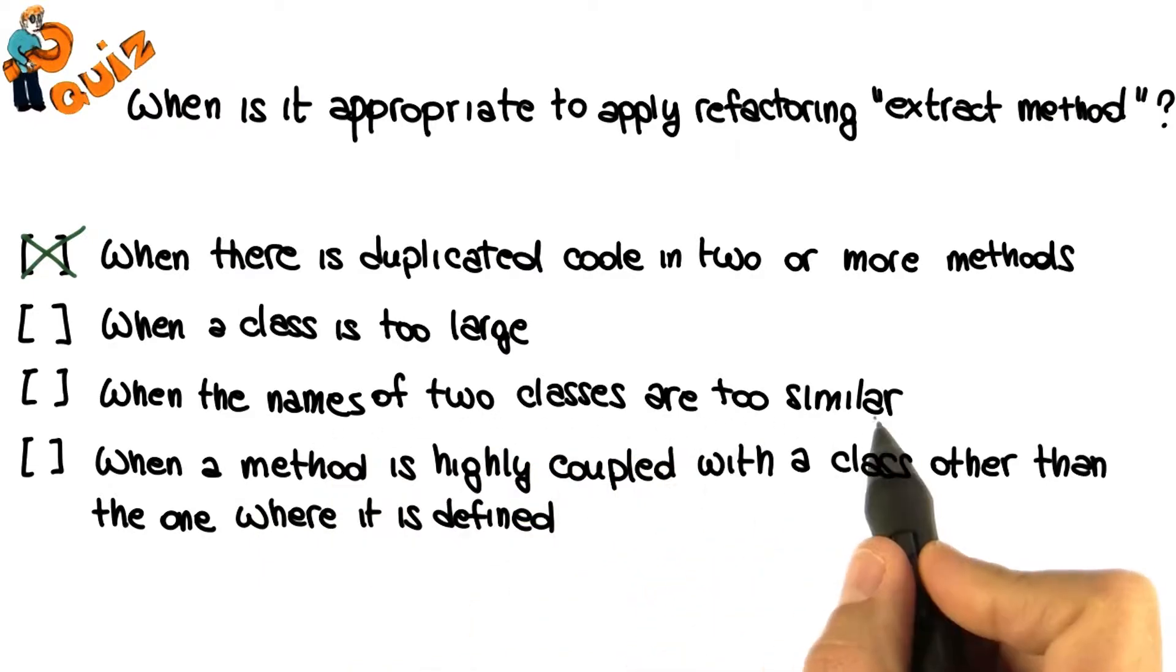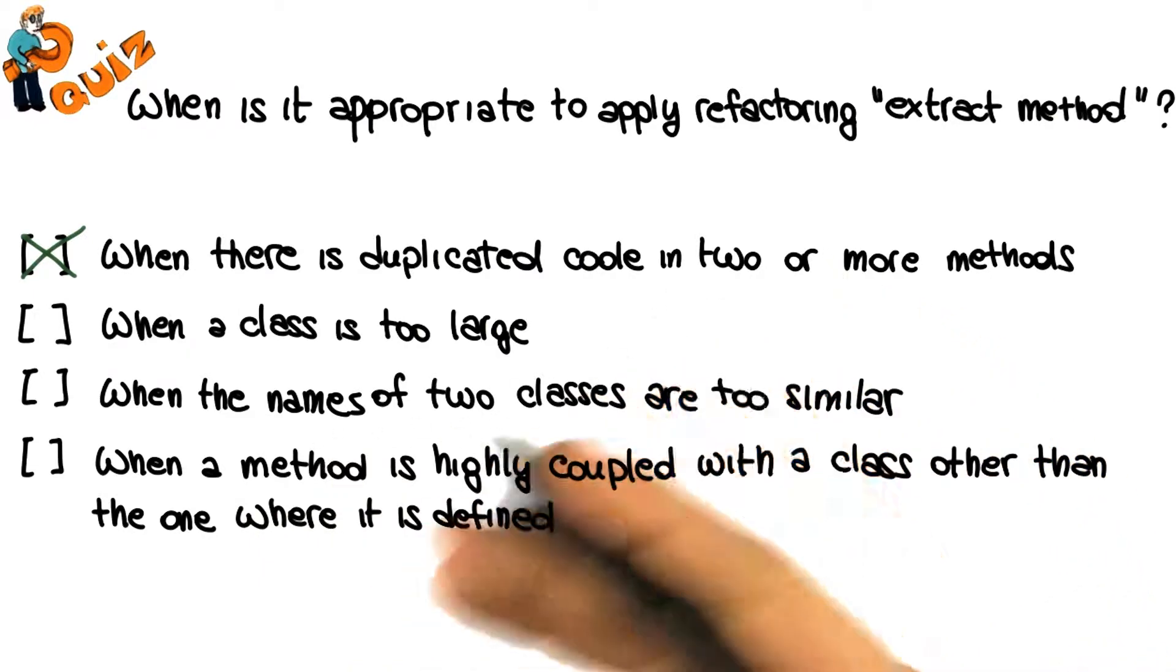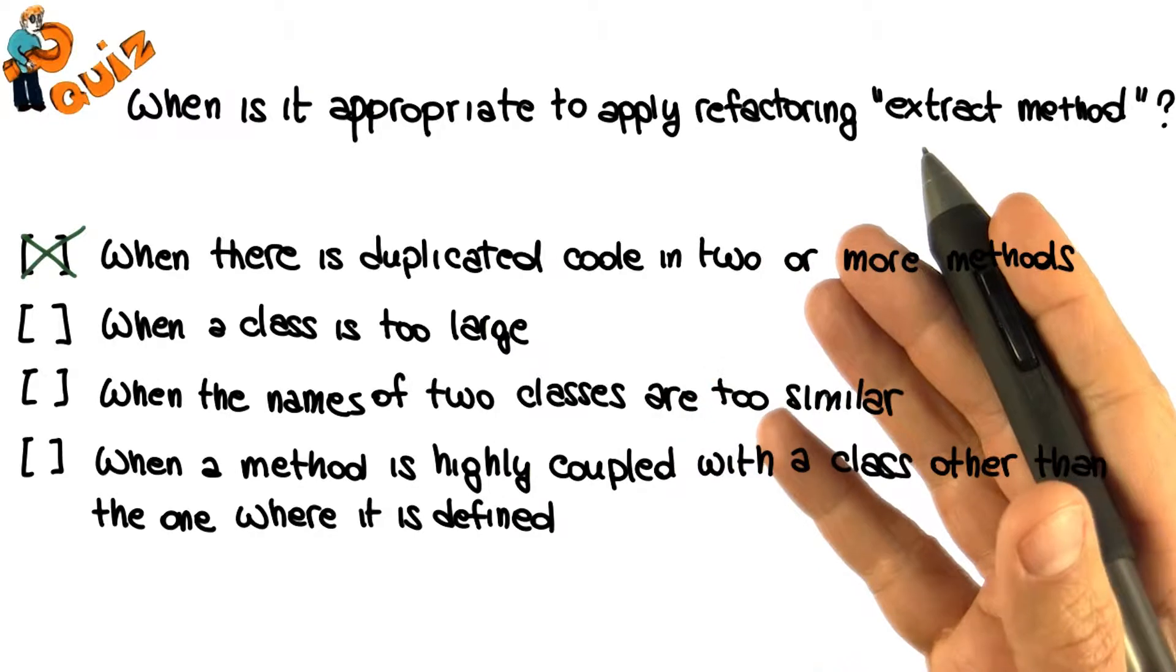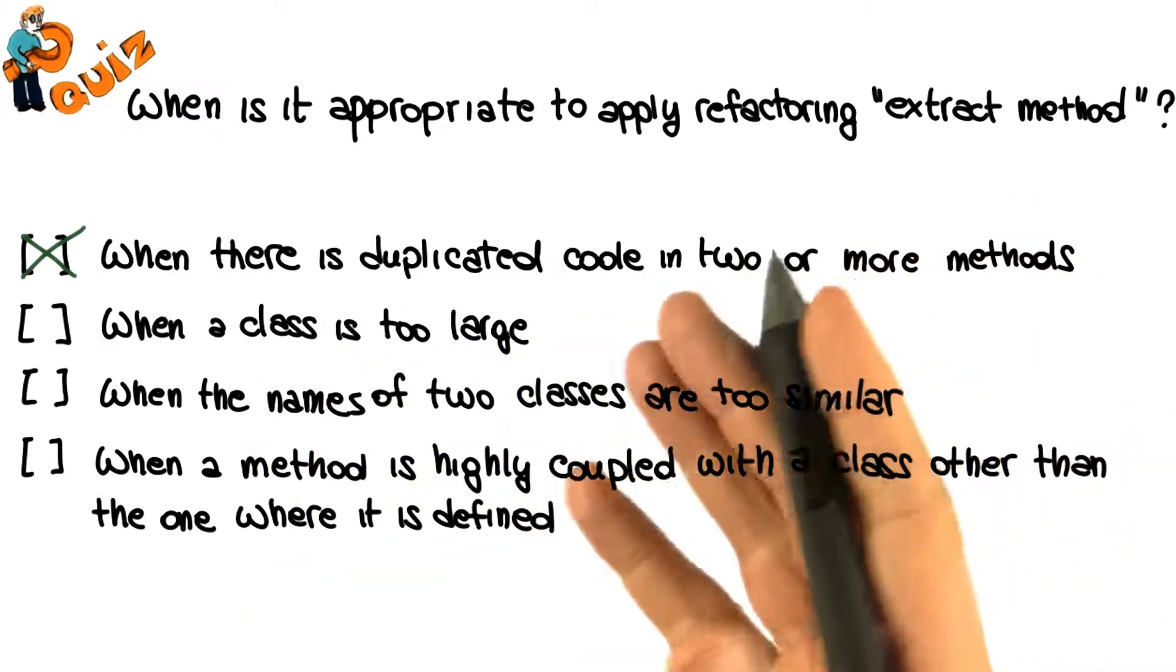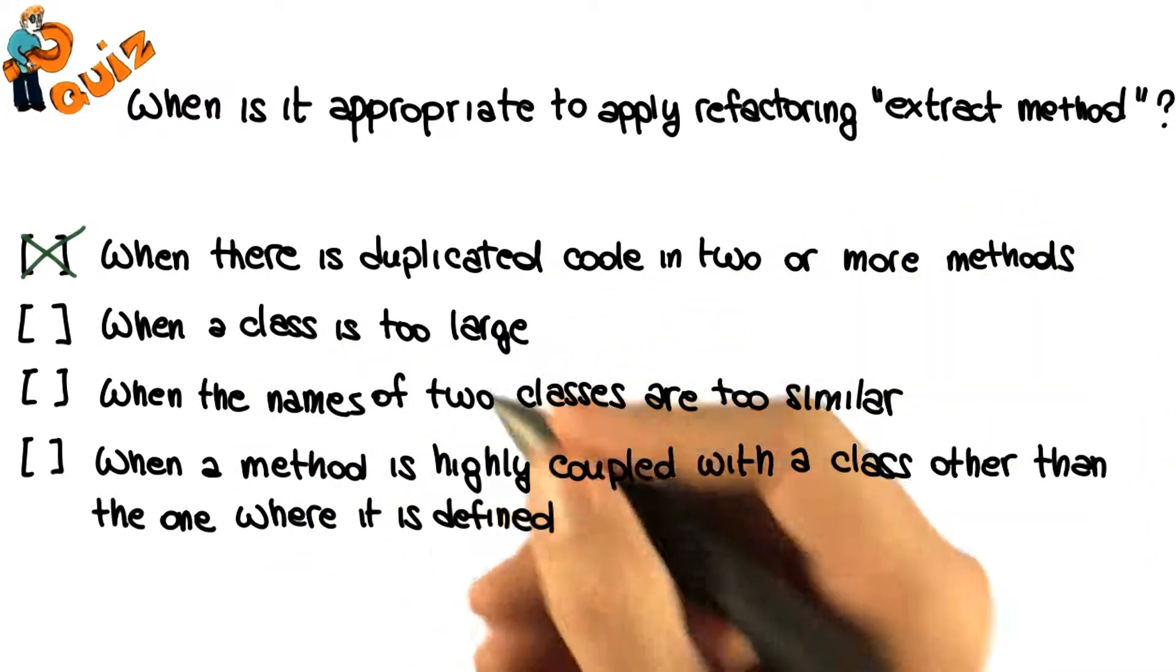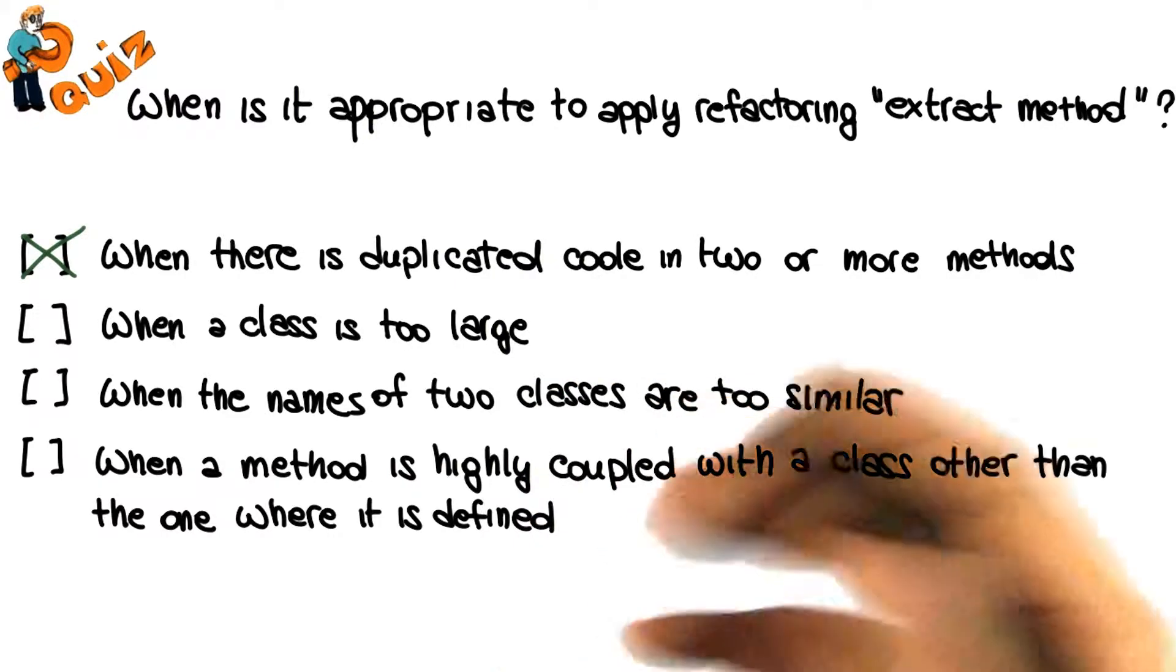Analogously, when the names of two classes are too similar, extracting a method will normally not help much. And all we need to do, in case having two similar names is actually a problem, is to rename one of the two classes, or both, if we wish.